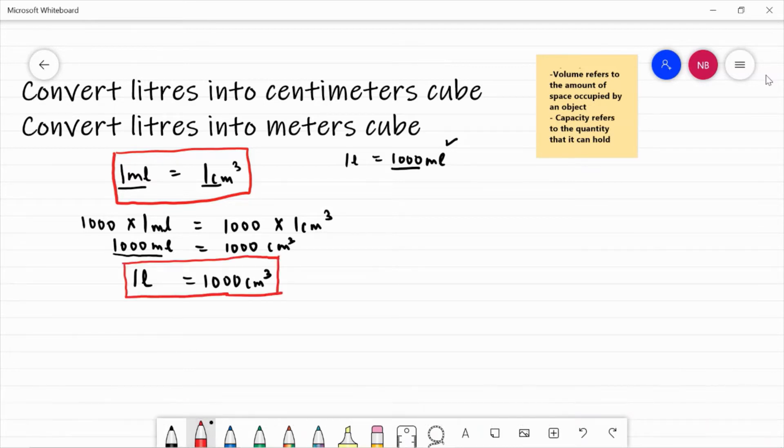So this is our third task to learn in this video, that is convert litres into metres cube. So let's do that by again knowing the relation between the centimetre and metre. So we know that one metre is equal to hundred centimetres. And if I want to know how much is one centimetre,